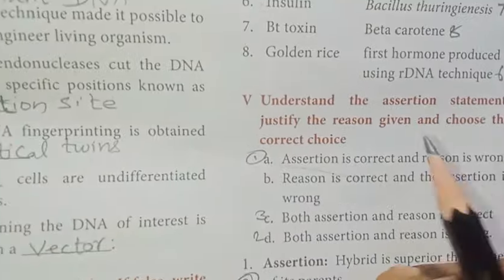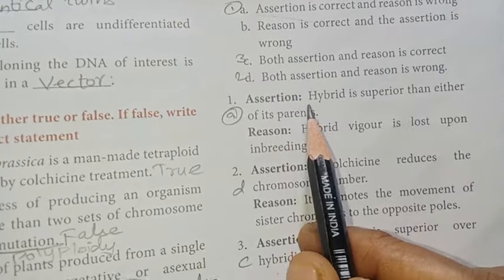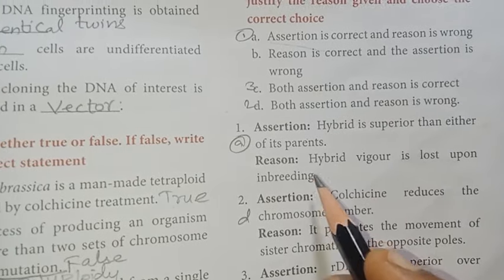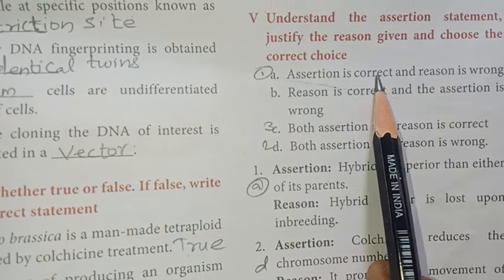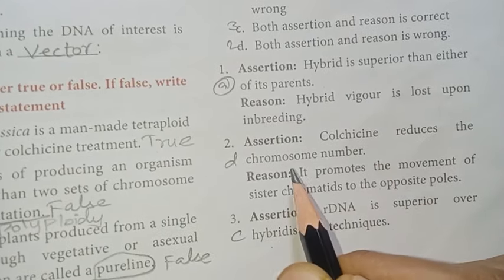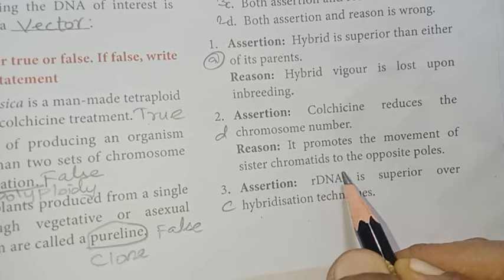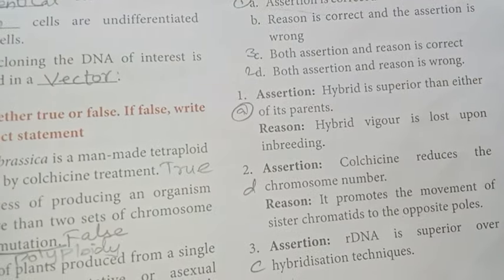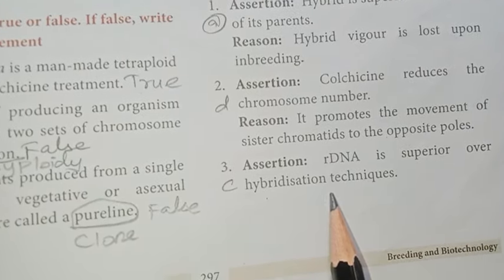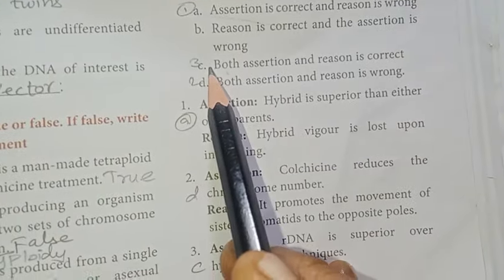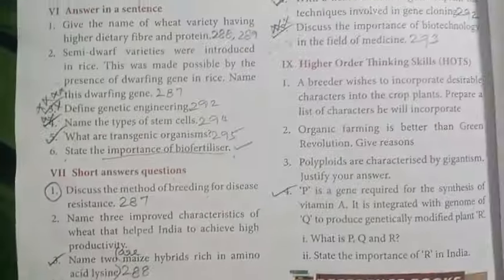Understand the assertion and reason. First: Assertion — a hybrid is superior to either of its parents. Reason — the hybrid vigour is lost upon inbreeding. Answer: option A — assertion is correct and reason is wrong. Second: Assertion — colchicine reduces the chromosome number. Reason — it promotes the movement of sister chromatids to opposite poles. Answer: option D — both assertion and reason are wrong. Third: Recombinant DNA is superior over hybridization techniques. Reason — the desired genes are inserted without introducing undesirable genes into the target organism. Answer: option C — both assertion and reason are correct.